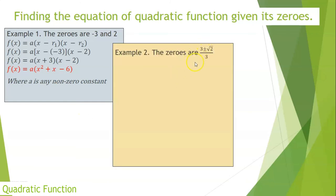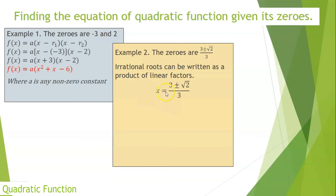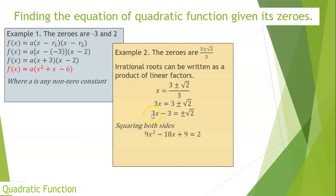What if the given is a radical (irrational roots)? Irrational roots can be written as x = (3 ± √2) / 3. Cross multiply: 3x = 3 ± √2. Transfer 3 to the other end and square both sides: (3x − 3)² = 2, so 9x² − 18x + 9 = 2. Simplifying, transfer 2 to the other side: the final equation is 9x² − 18x + 7 = 0.